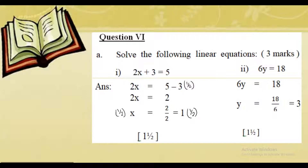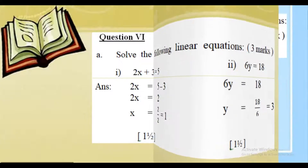For the second linear equation, 6y equals 18: we write 6 into y equals 18, so y equals 18 divided by 6, which equals 3. The transposition step carries one mark and the final answer carries half a mark.